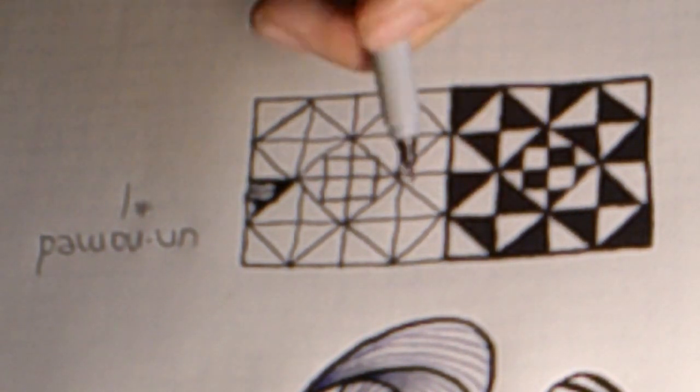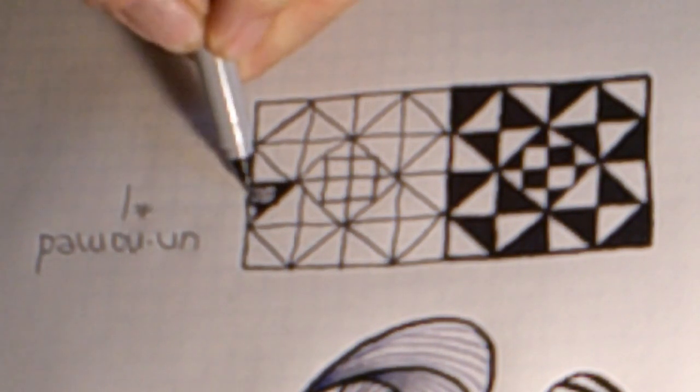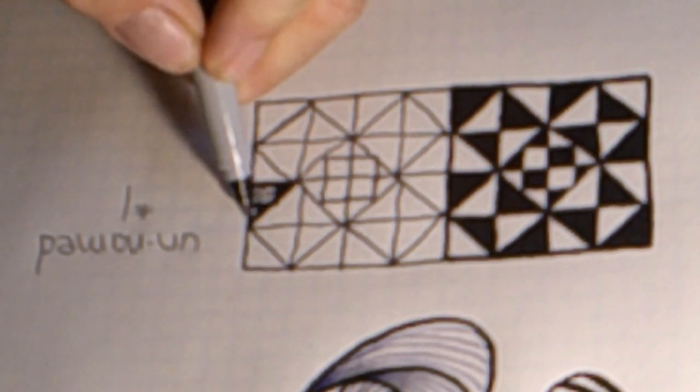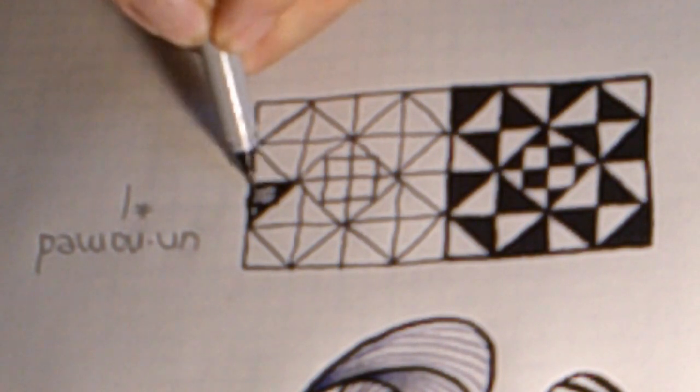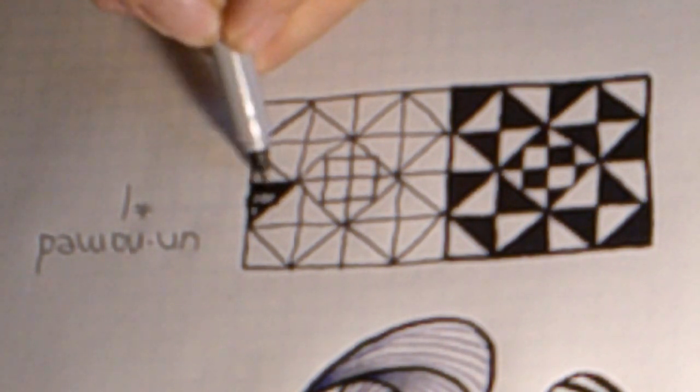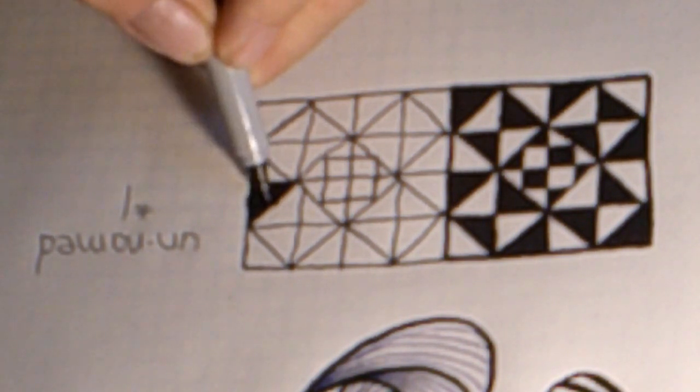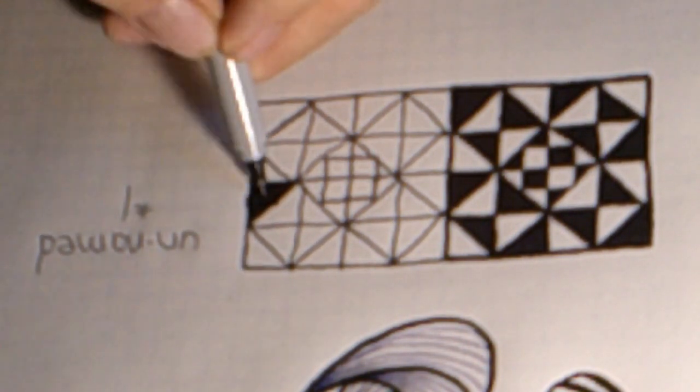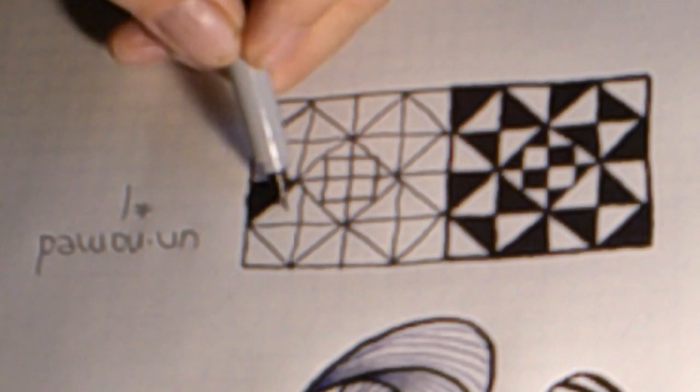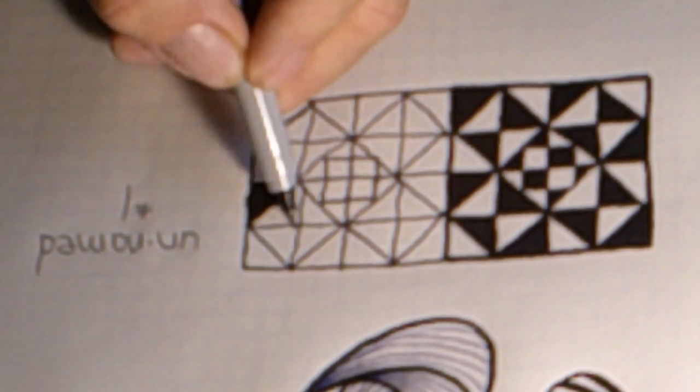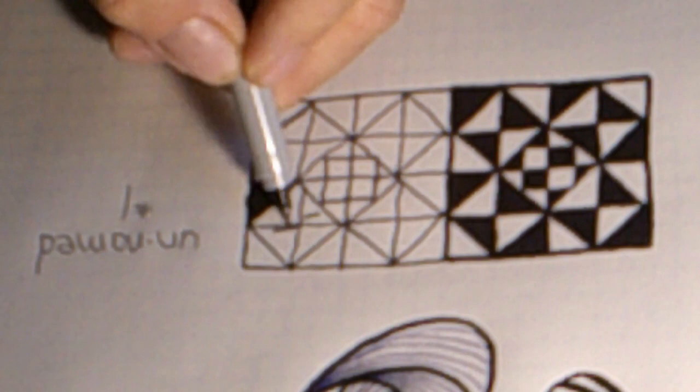All right, again we're going to color each of these, every other one of these areas black or white. We'll color it black or leave it white. I started there, this is black, so this will be white, so that this and this will be black.